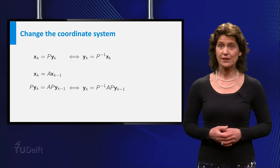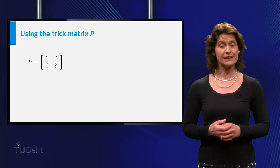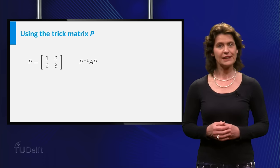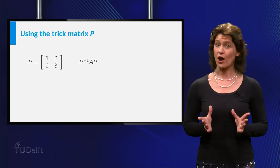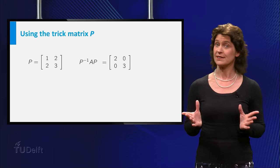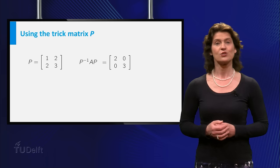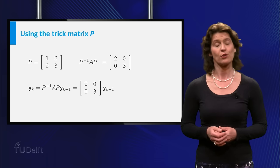Well, here is how smart you have been. If, in our example, you take the matrix P equal to 1, 2, 2, 3, then you can compute P inverse AP, but only if you stop the video now and take your time to do the calculations. Hey, it's a diagonal matrix! So finding a formula for yk is easy, just like in our first example.